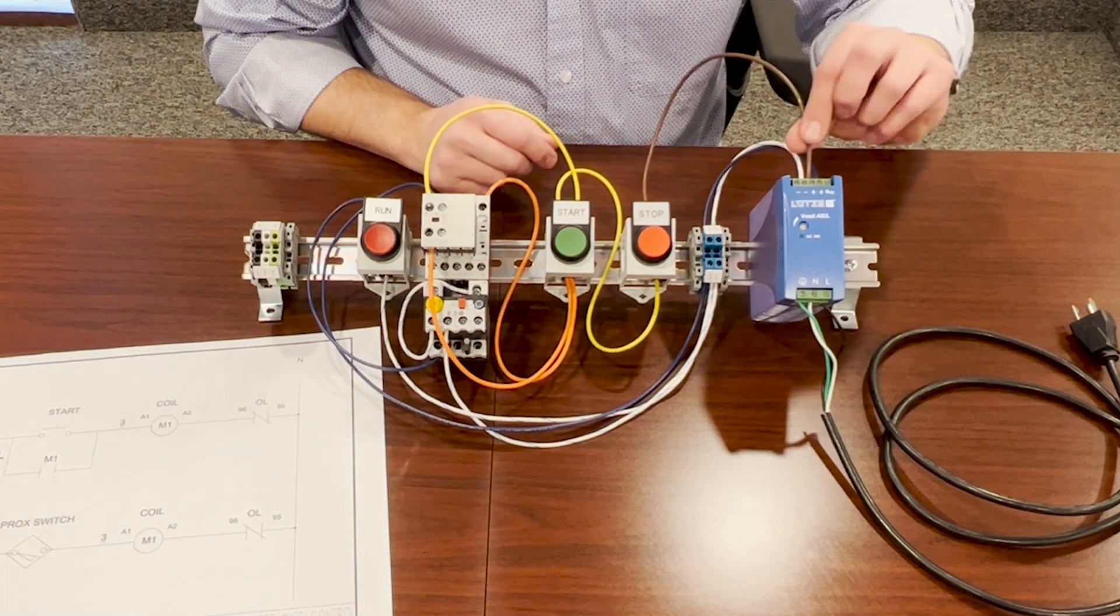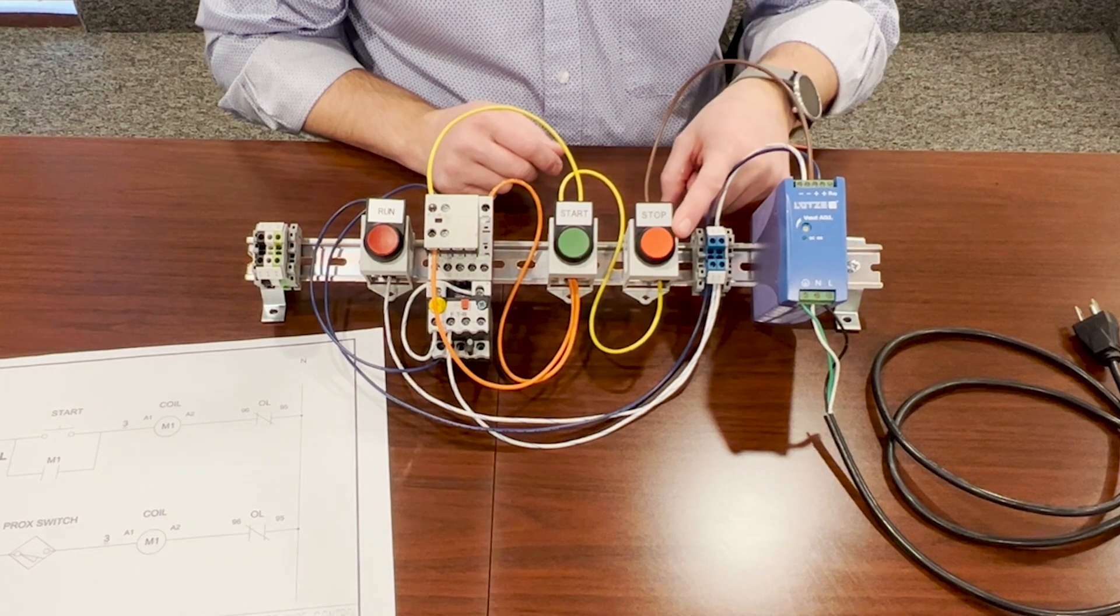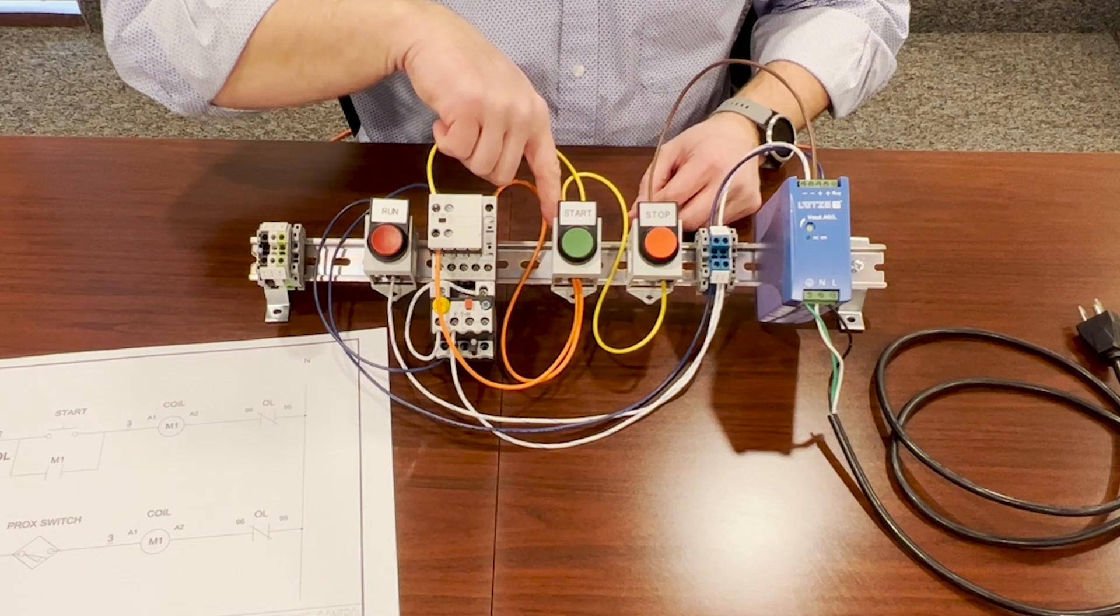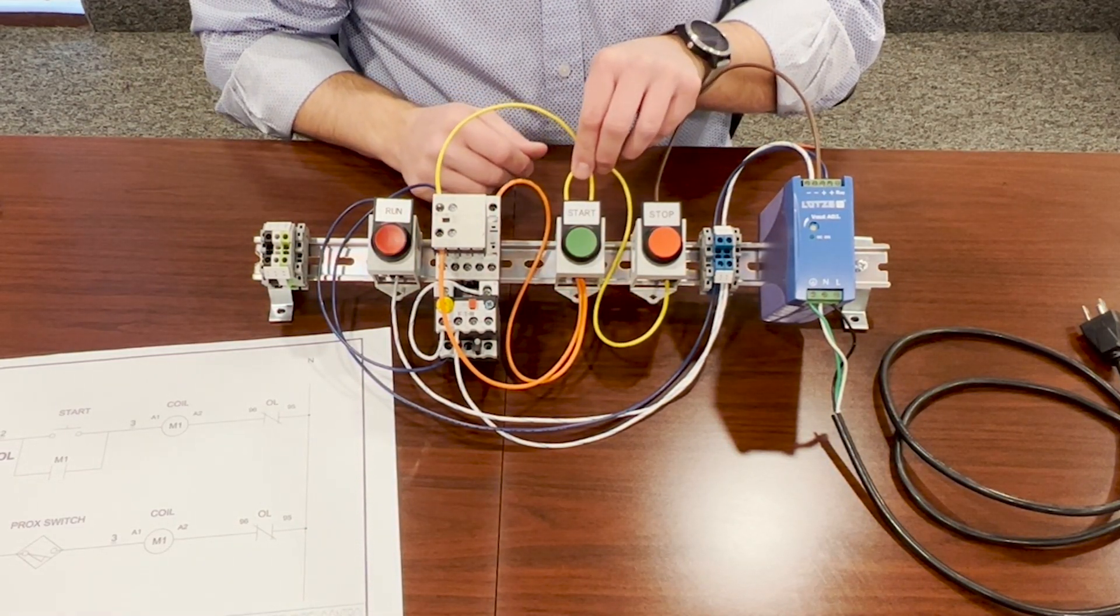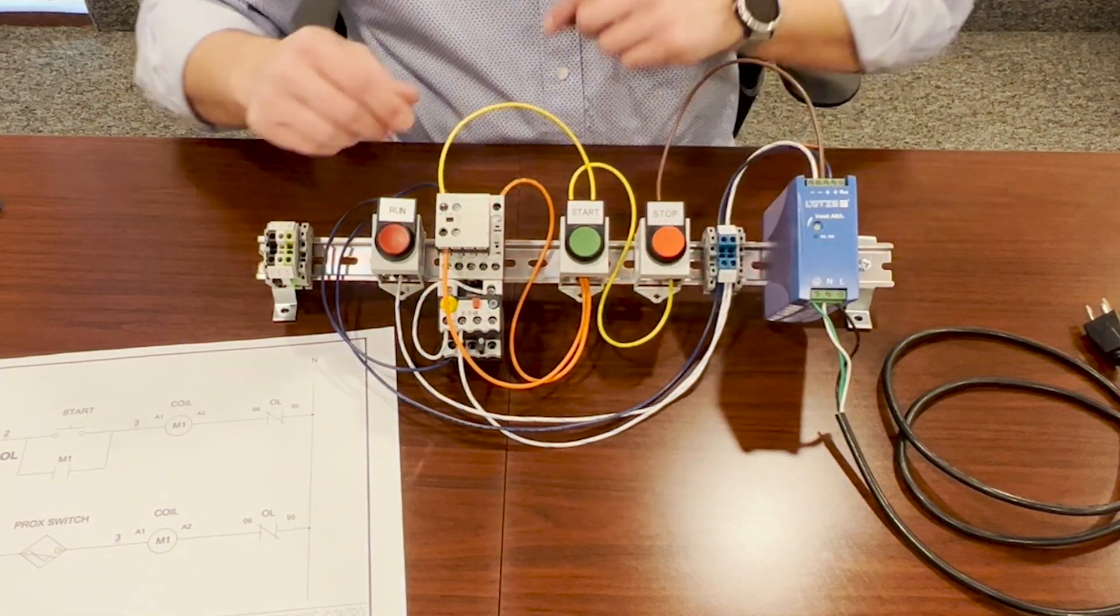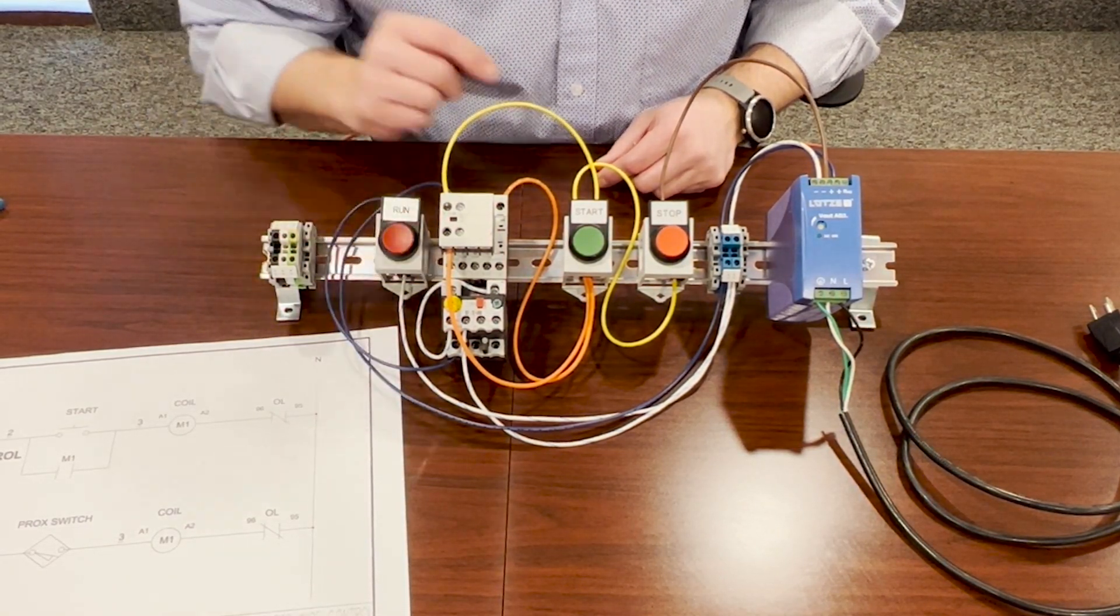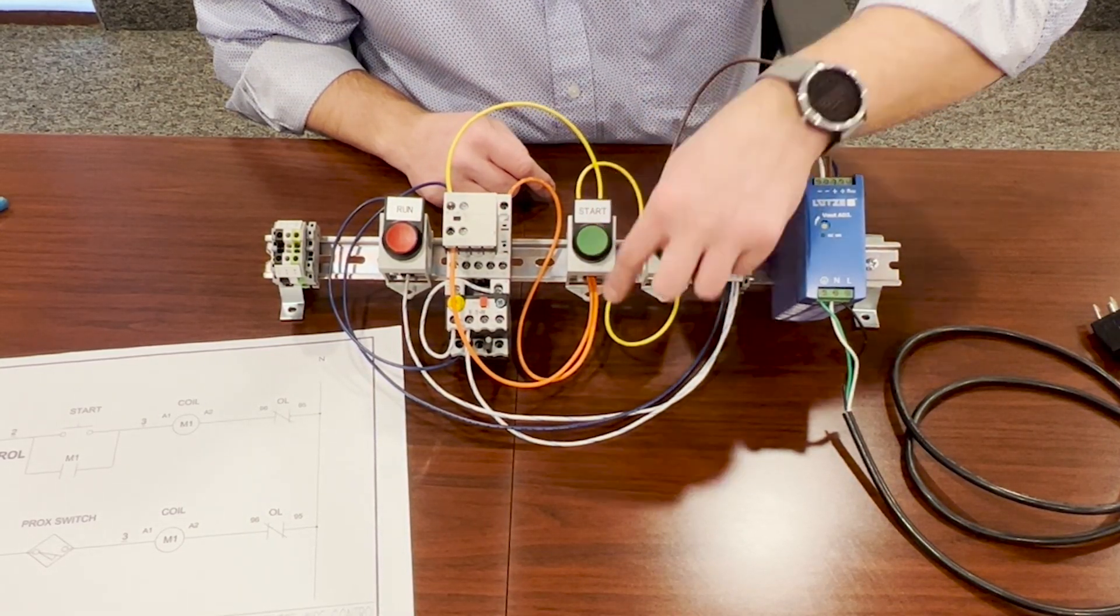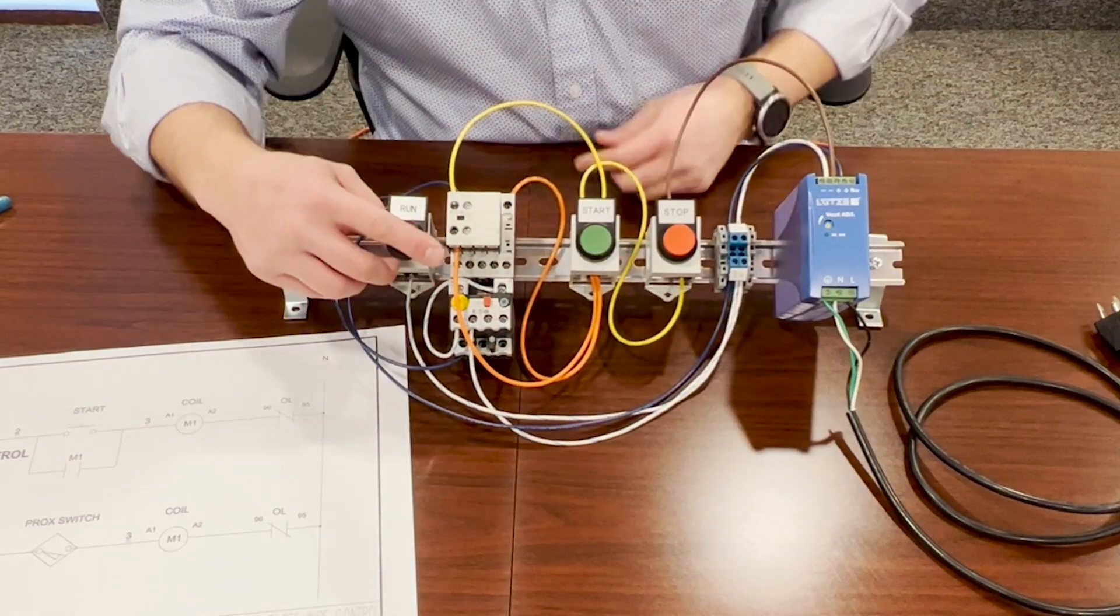So our 24 volts is going to come out of the power supply, and it's going to go to our stop button first. Normally closed contact. From there, it's going to come around to the start button, and from the start button, it actually goes two places. One, on the top of the start button, the same 24 volts that's coming from the normally closed contact here, is going to go up to our normally open contact on our motor starter. And then off of the other side of the normally open contact on the starter, it goes to the coil on the motor starter and up to the auxiliary contact.